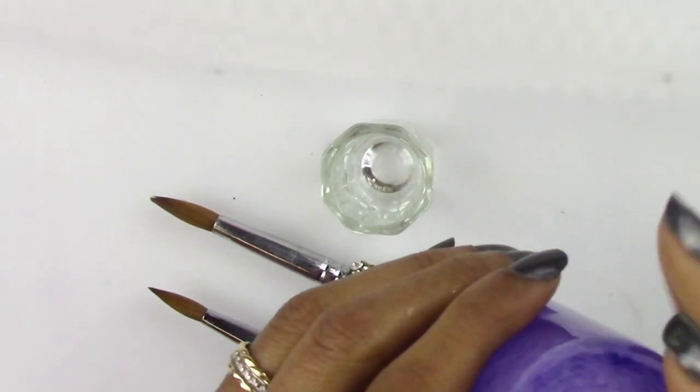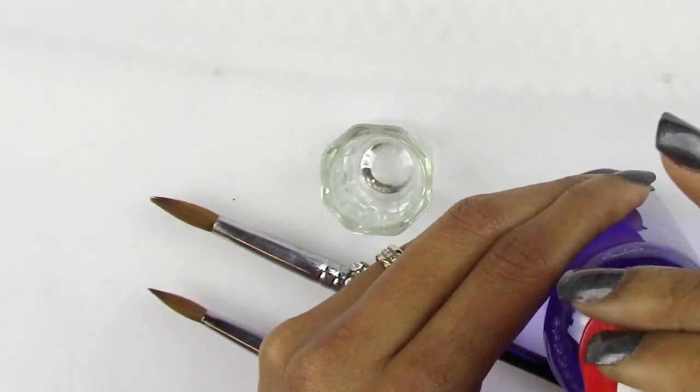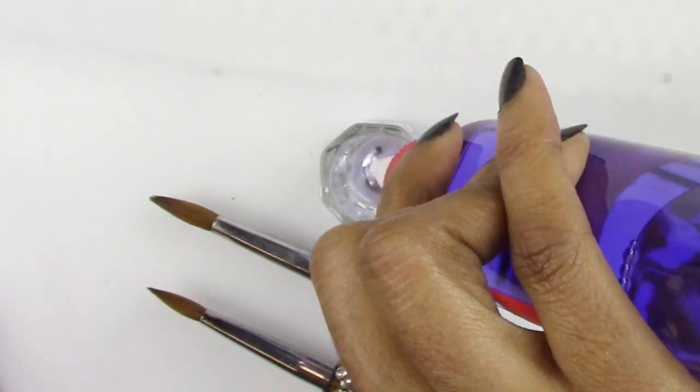Make sure you give it a good shake so the acetone and the monomer is dispersed evenly. You put a little bit in there—you don't need much.